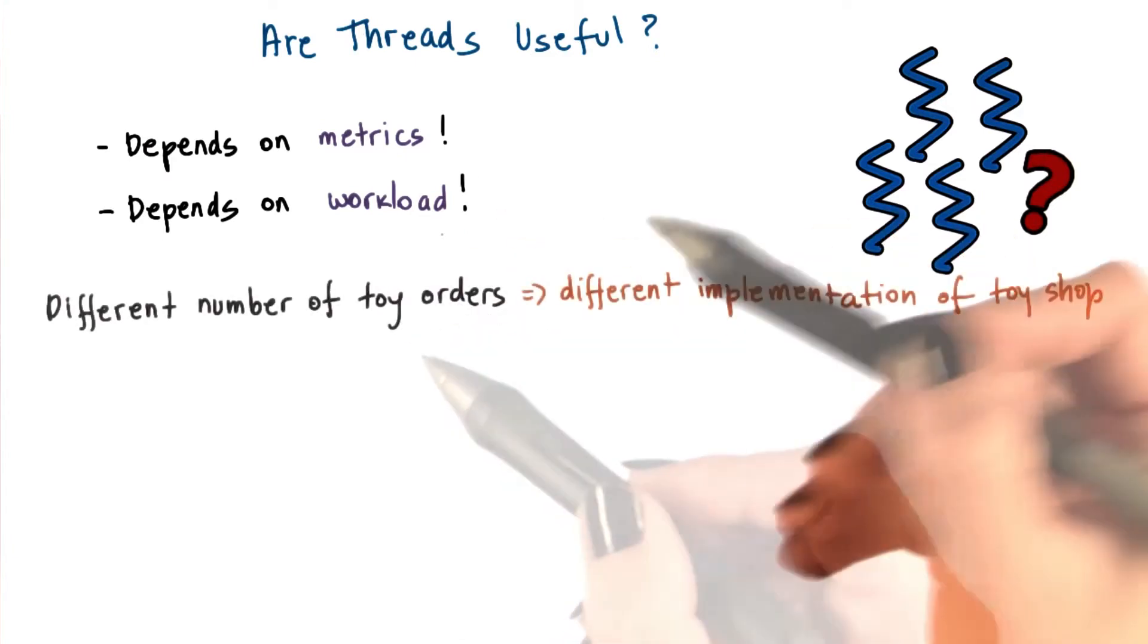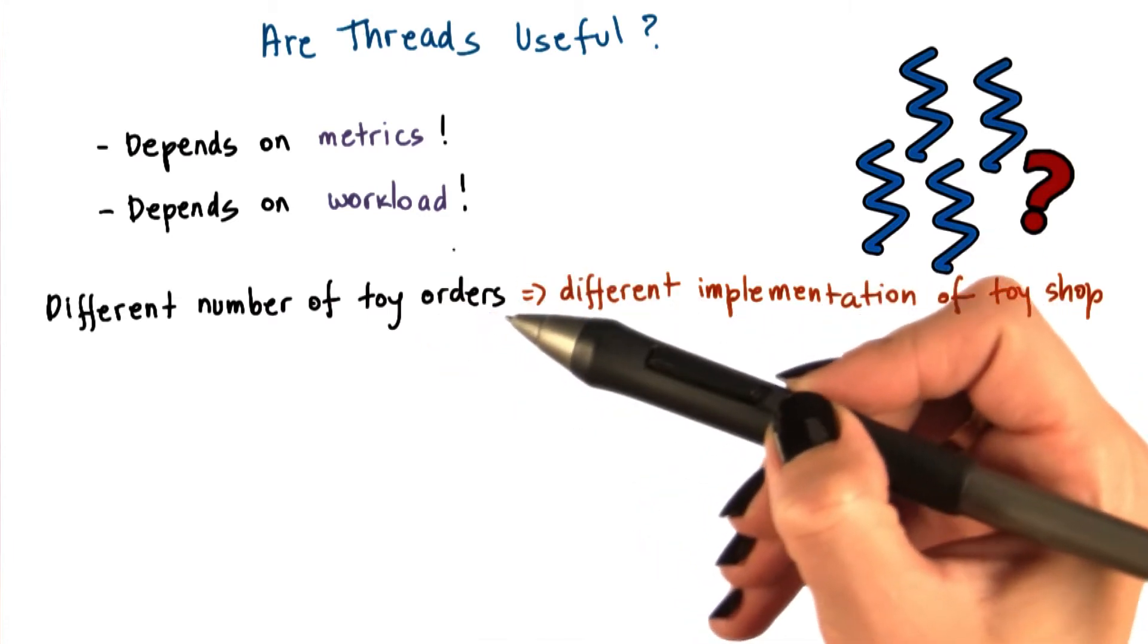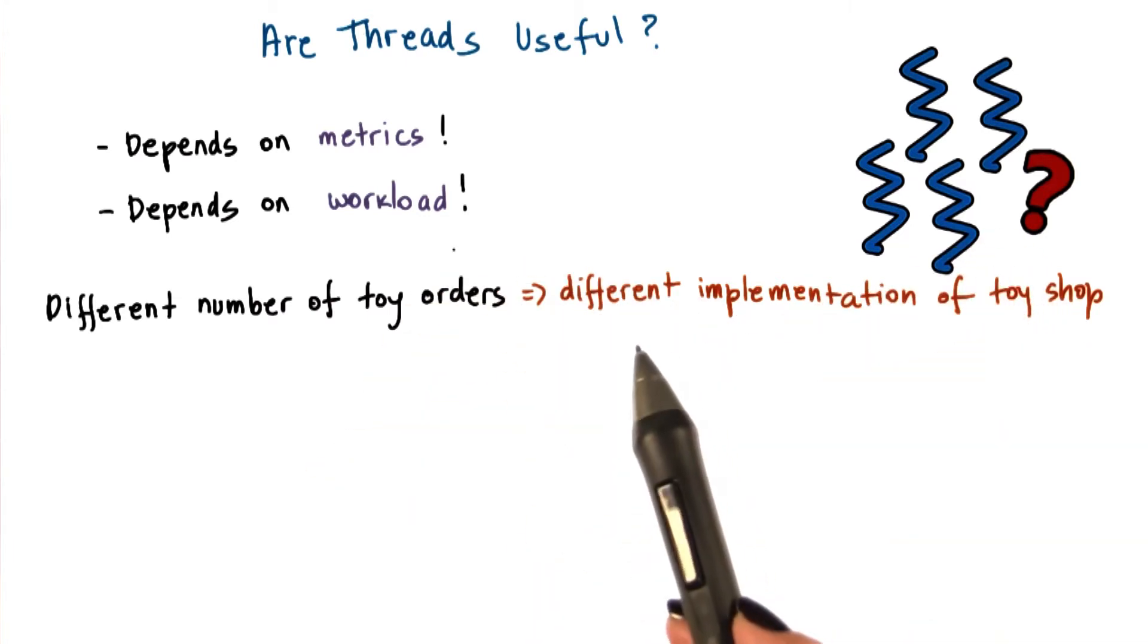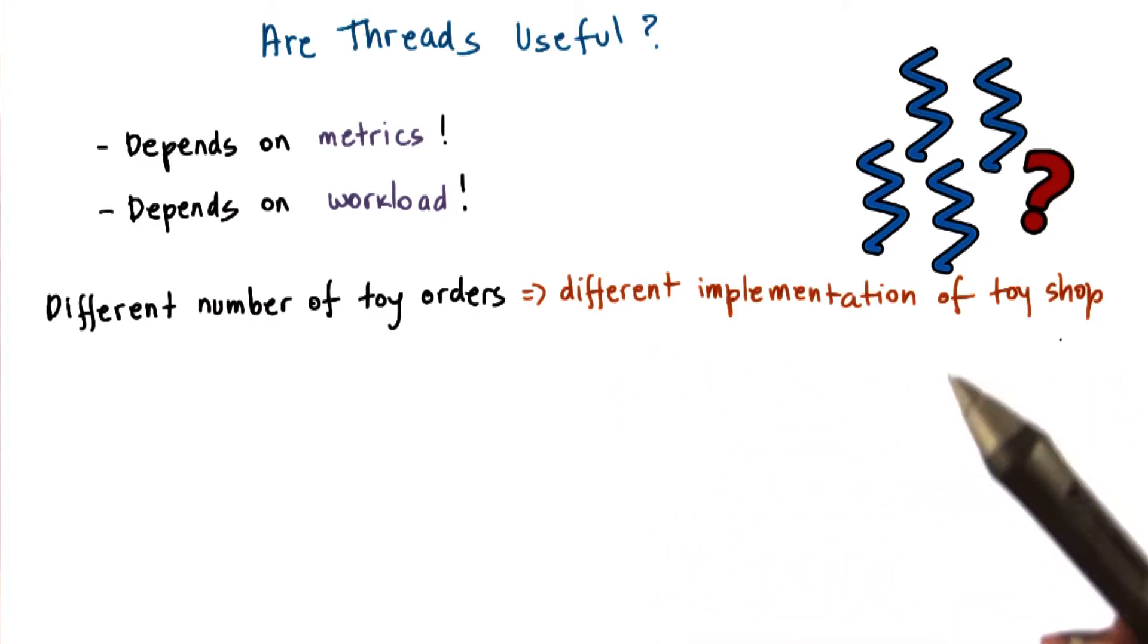So in the toy shop example, depending on the workload, the toy orders, and the metric we were concerned with, it led us to conclusions that a different implementation of the toy shop, different way to organize its workers, was a better one.